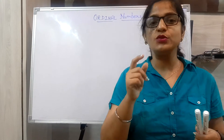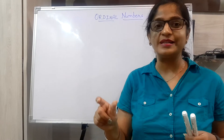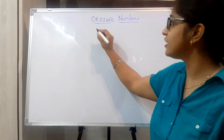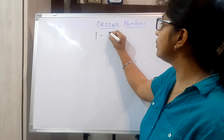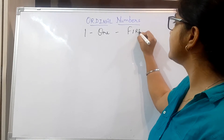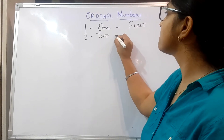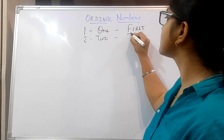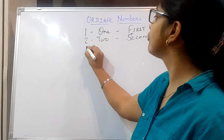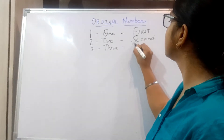In maths you write 1, 2, 3. But in ordinal numbers, for 1 you write F-I-R-S-T, first. For 2, the ordinal number is second. And for 3, what ordinal number do you use? Third.